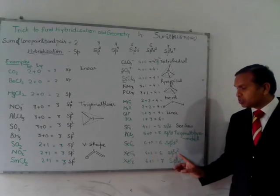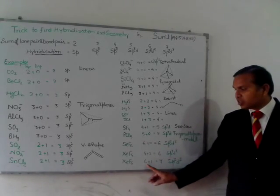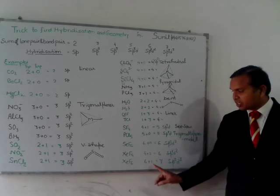For XeF4, there is 4 bond pair and 2 lone pair of electron, the sum is 6 and it is sp3d2 hybridized. For XeF6, there is 6 bond pair electron and 1 lone pair of electron, the sum comes 7, so it is sp3d3 hybridized.